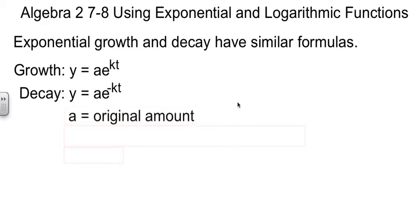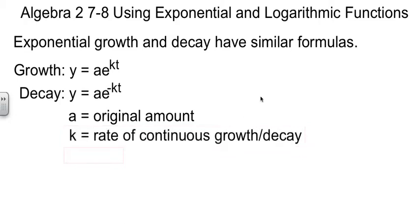In both cases, a stands for the original amount of what you had. k stands for your rate of continuous growth or decay, depending on which way you're going. And I'll bet you can guess what t stands for: time.